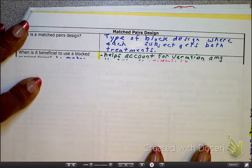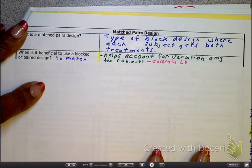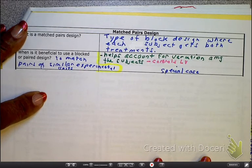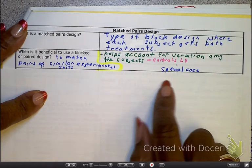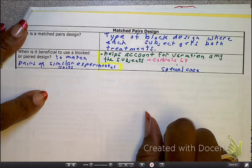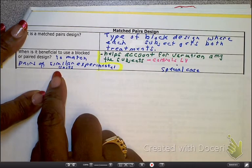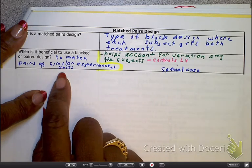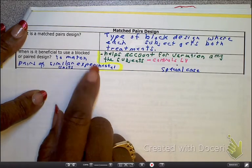Now I'm going to continue though. So as I continue here, when is it beneficial to block? Well, it's beneficial to block the variation among the subjects and to even give us more control of the lurking variable. Please remember, when you match pairs, they have to be similar experimental units.